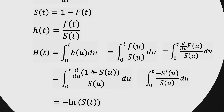The cumulative hazard also relates to the other functions in a deeper way. The hazard is the PDF divided by survival — that's the definition. The PDF is the derivative of the CDF. And the CDF is just one minus survival. So on the numerator we have the differential of one minus survival. The differential of a constant is zero, so it's just the negative derivative of the survival. When you're integrating a function's derivative over itself, it ends up being the log of that function. So the cumulative hazard is simply the negative log of the survival function.